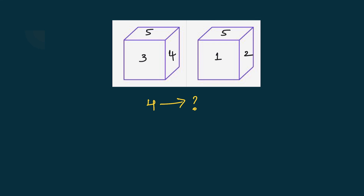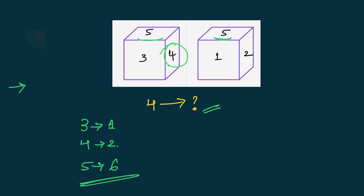In this problem, find the opposite face of four. Applying step one — same number on the same face — number five is found on the top face of both dice. Therefore the remaining faces are opposite: three is opposite to one, and four is opposite to two. The remaining pair gives five opposite to six. Since they asked only about four, the answer is two is opposite to four.